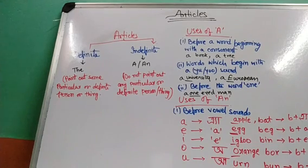First of all, what is an article? Articles belong to a group of demonstratives. What are demonstratives? Demonstratives are those words which are used before a noun or a pronoun. They are used to qualify a noun or a pronoun.